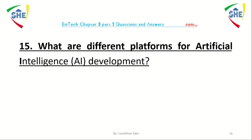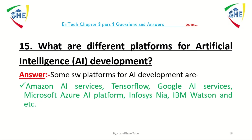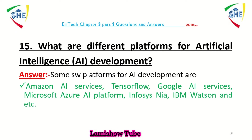Question number 15: what are different platforms for artificial intelligence development? Some software platforms for artificial intelligence development are Amazon AI services, TensorFlow, Google AI services, Microsoft Azure AI platforms, and others.